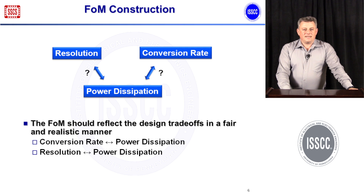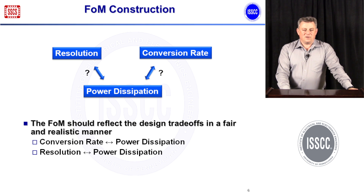Now that we've accepted that we want to focus on three primary metrics to construct a figure of merit, how should we combine these and treat them mathematically? We need to find a good relationship that describes the trade-off between resolution and power dissipation, and between conversion rate and power dissipation, and I will discuss each one now.